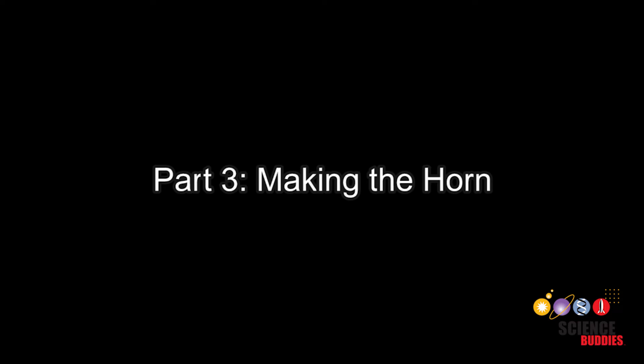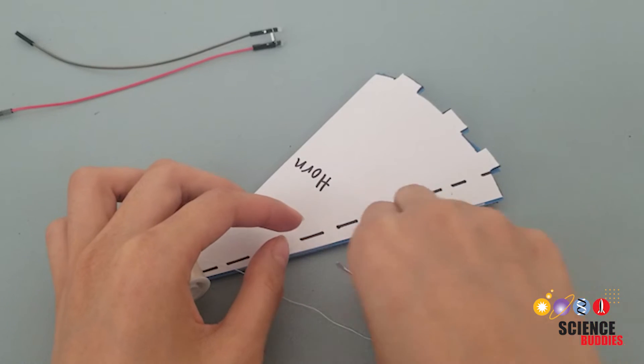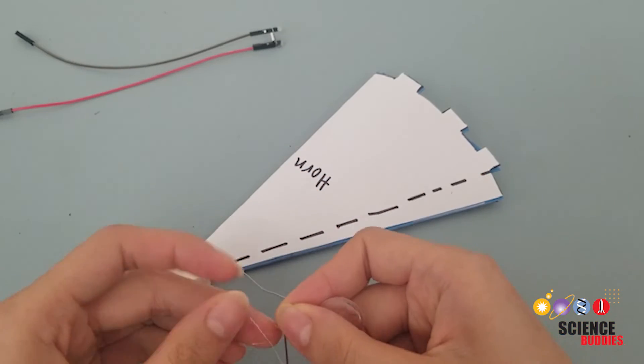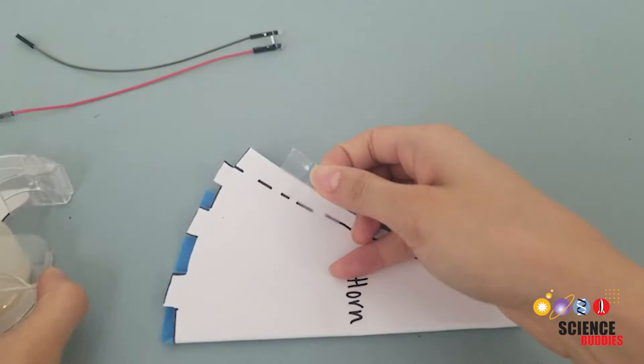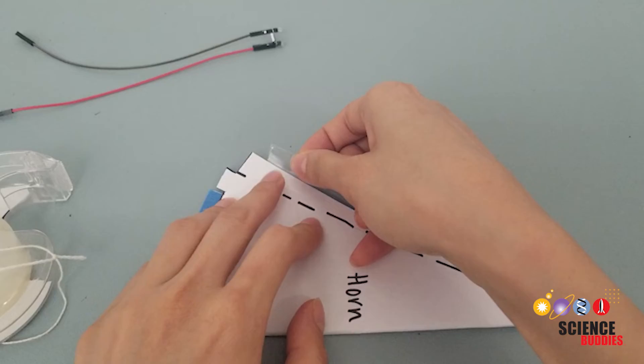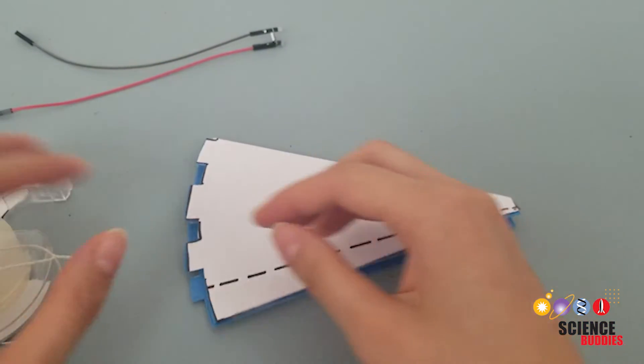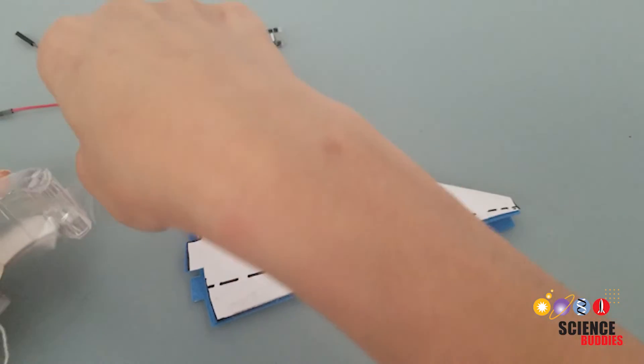Part 3, Making the horn. Take your horn cutout piece, and this should be a layer of paper taped onto a layer of felt, and fold it in half vertically down the middle. You should be sewing through two pieces of felt and two pieces of paper, like the diagram. To help you keep the pieces together, you can use a little bit of tape.